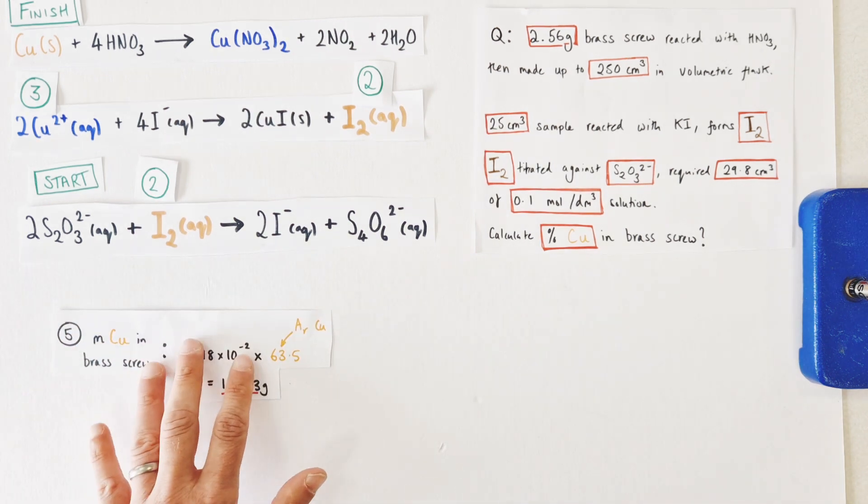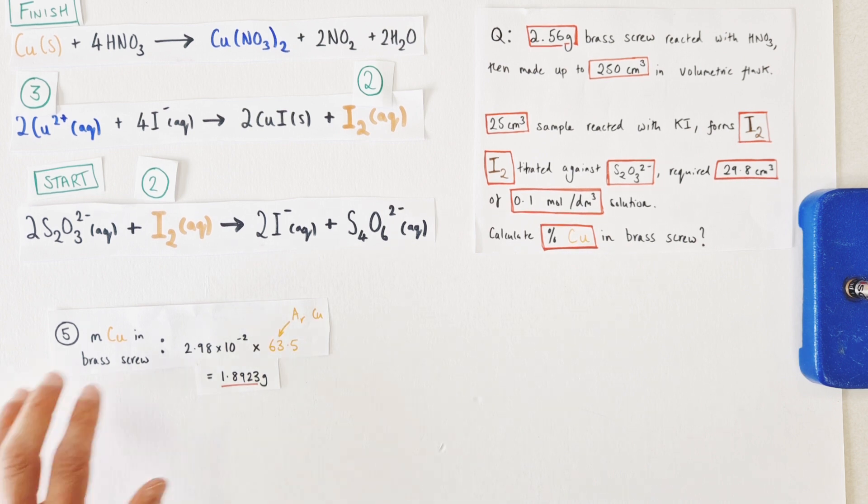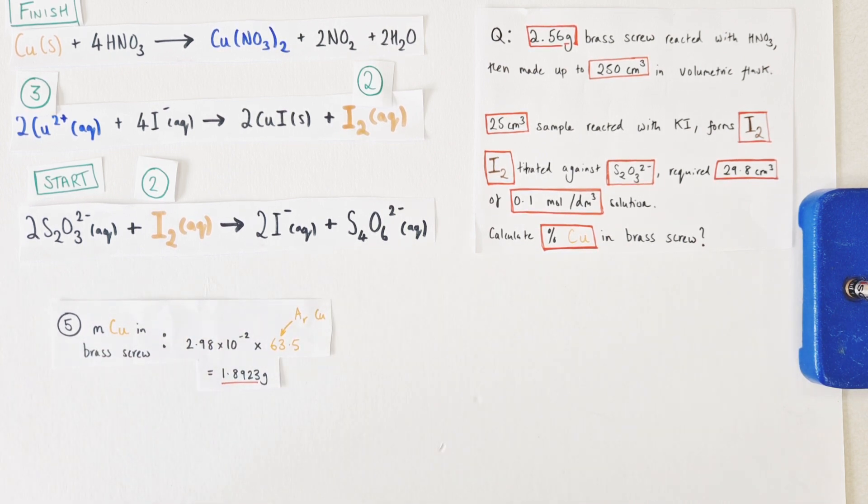We've got to work out the mass of copper in the brass screw. So we know the number of moles in the previous calculation was 2.98 times 10 to the minus two, and of course if we multiply that by the relative mass of copper, moles times relative mass equals mass in grams, so moles times the relative mass of copper, which is 63.5 from our periodic table, we find out we have 1.8923 grams worth of copper in the brass nail.